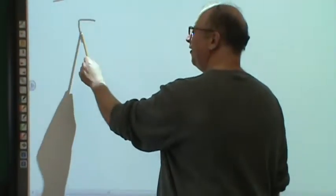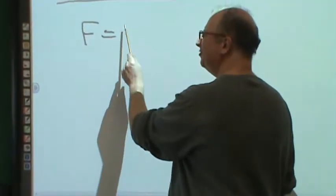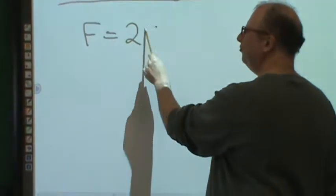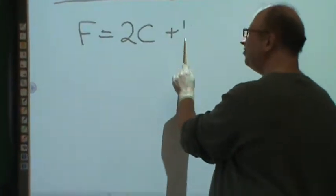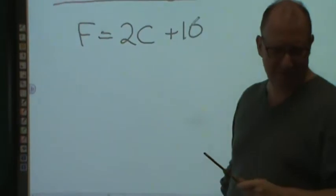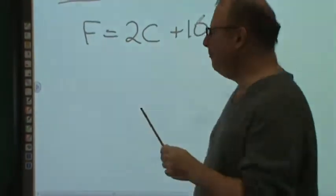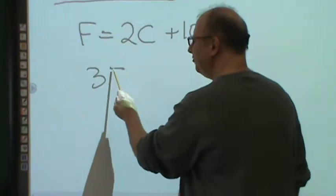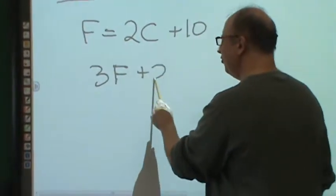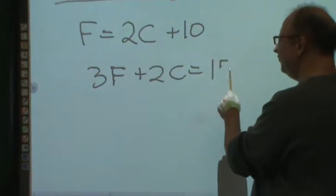We noticed that the cost of flowers is equal to two boxes of chocolate plus an additional $10. And because Eros is so popular, he bought three different girls flowers and two different girls chocolate and he spent $150.